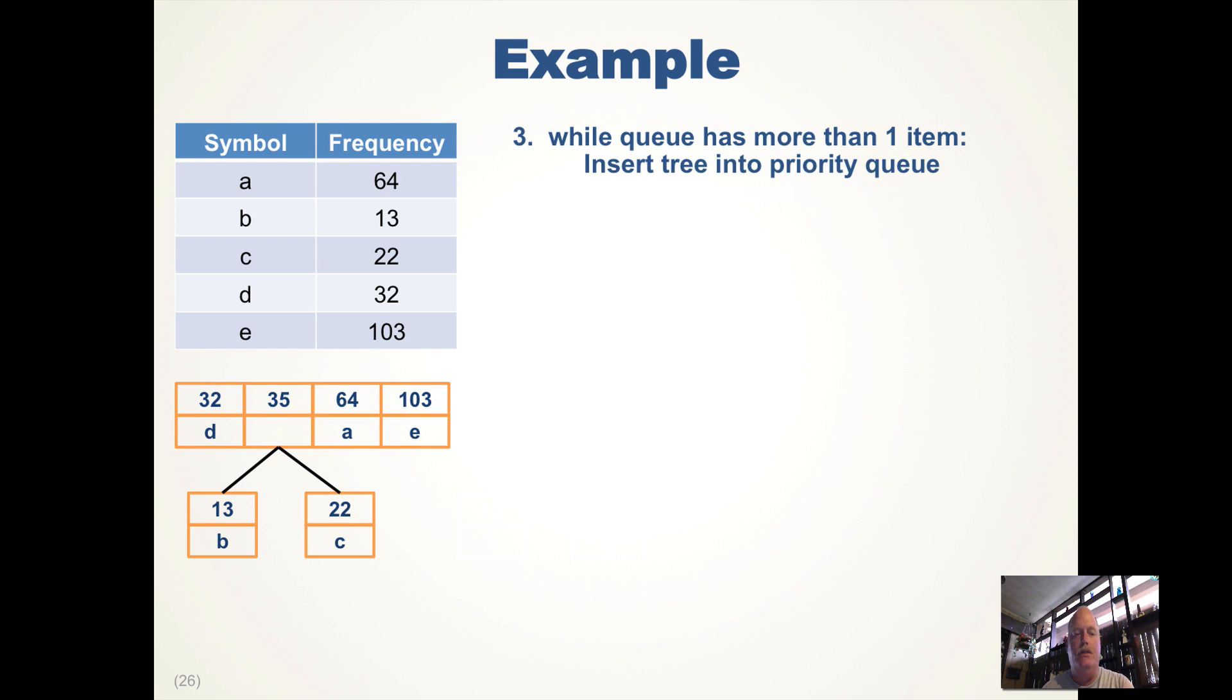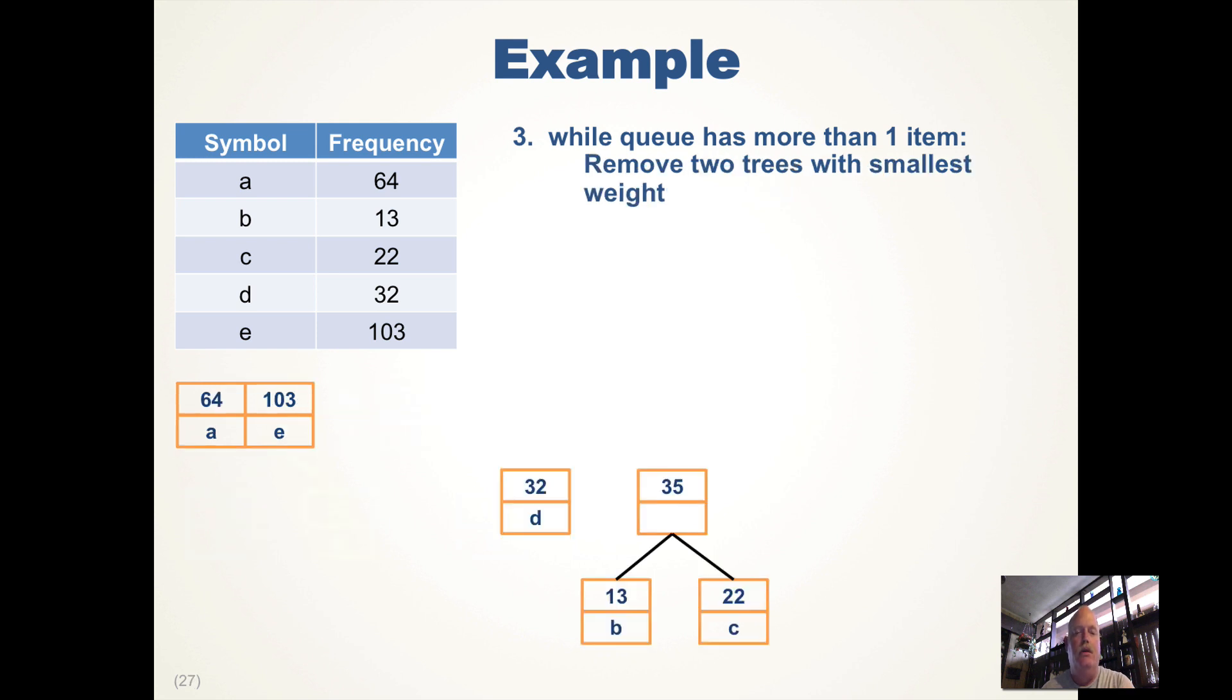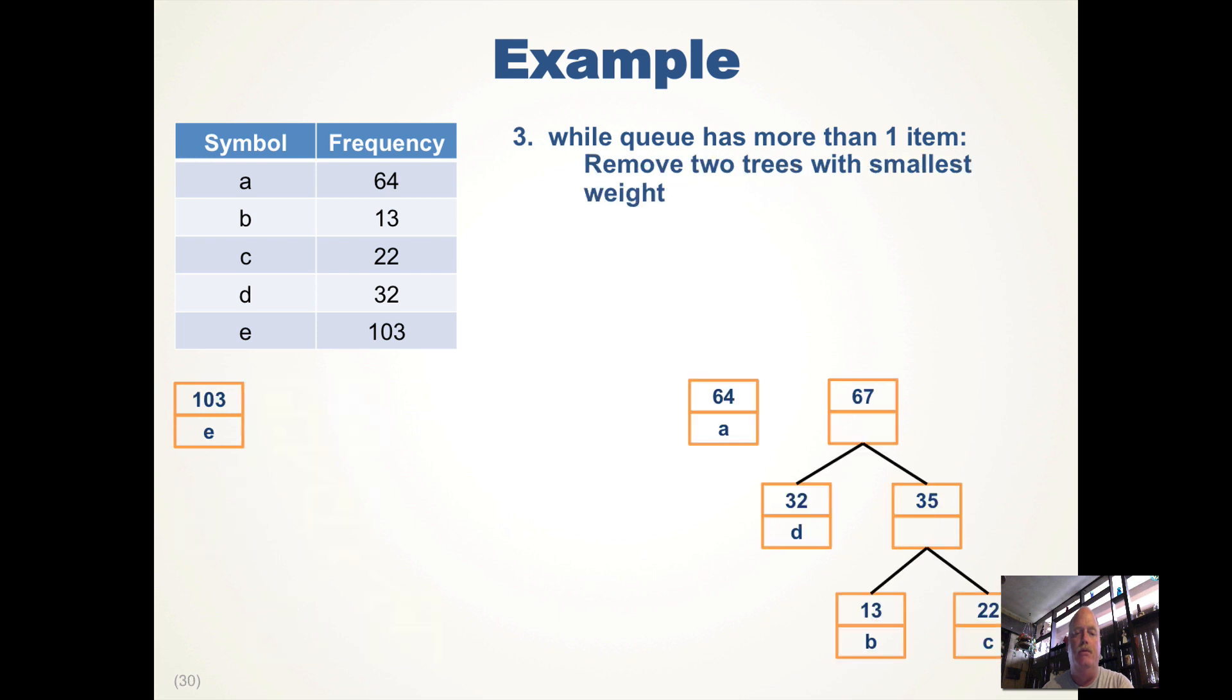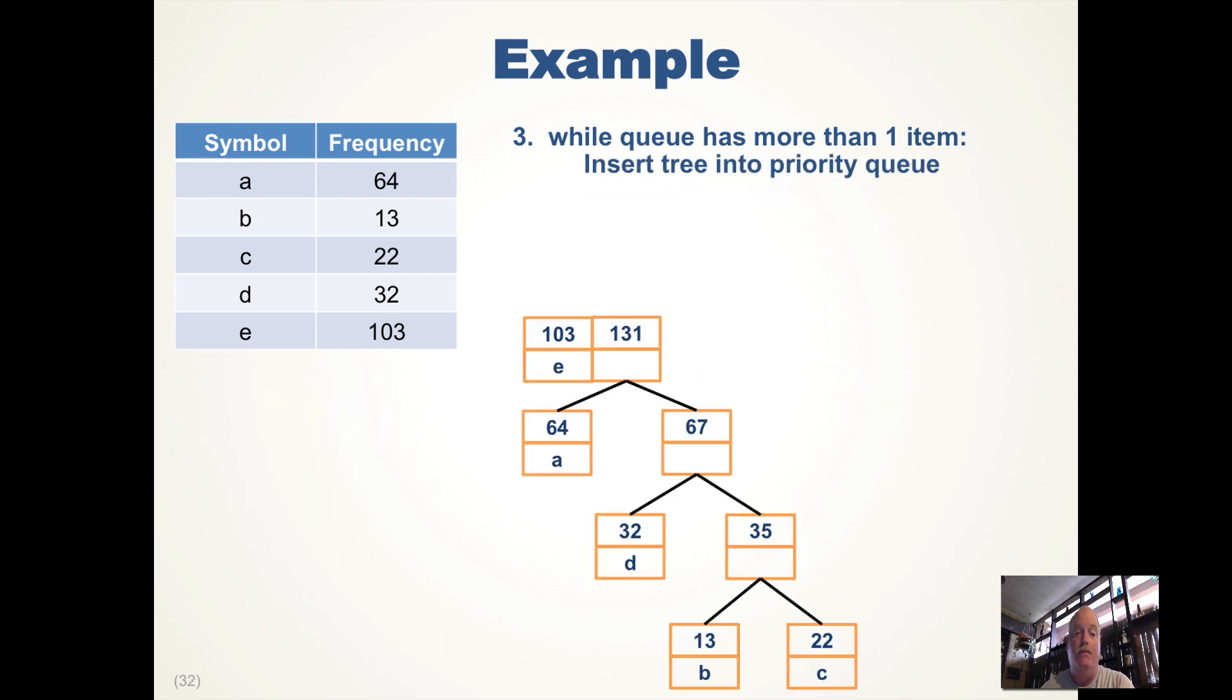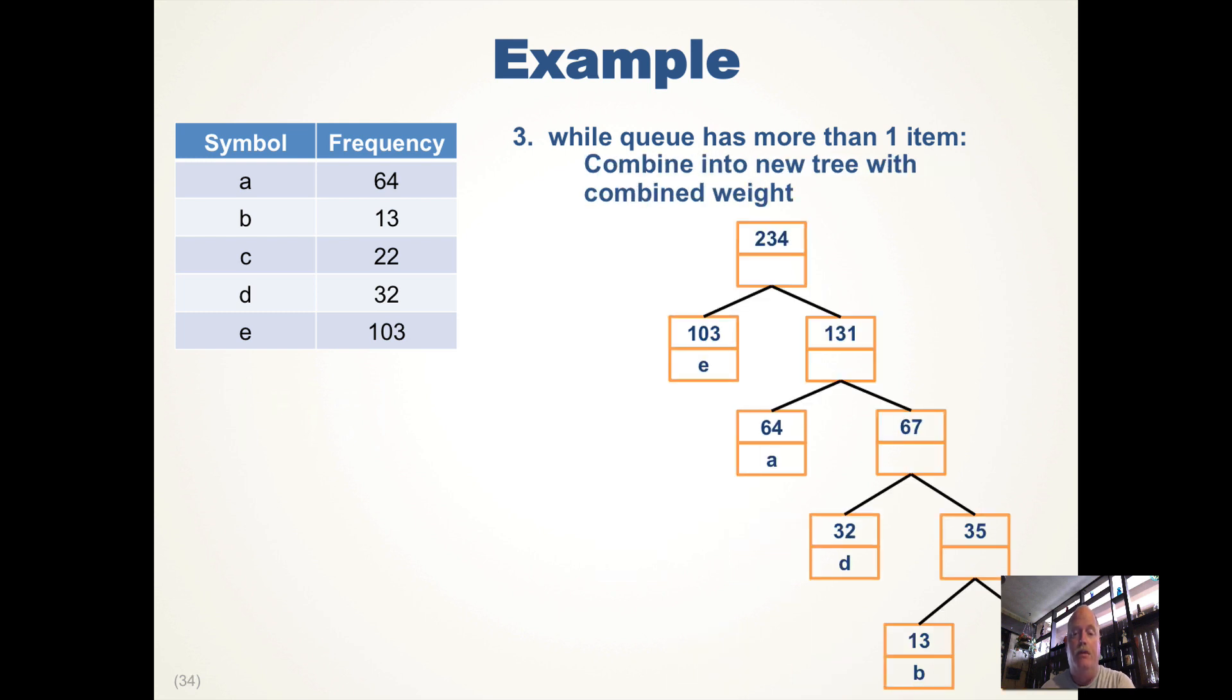The 35 is now the second least in the queue. Pull them out, combine them, insert. Pull them out, combine them, insert. I had to move my priority queue because it won't fit on the slide.